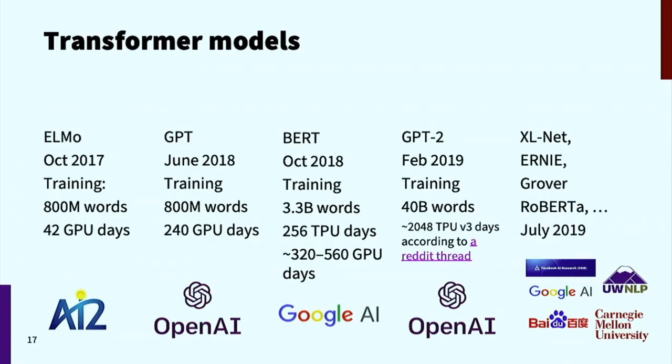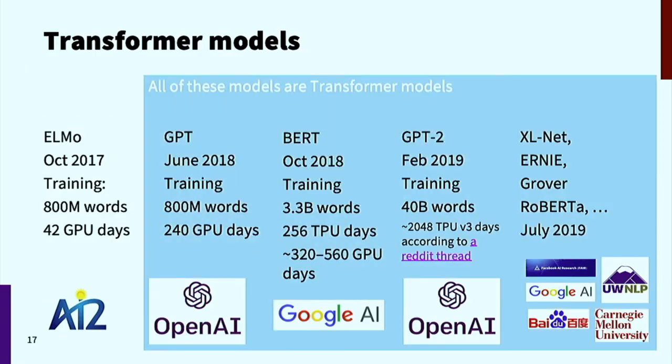Part of this is just scaling and making things bigger and bigger. But the other part is that for all of these models apart from the first one, they used a new type of neural network called a transformer network.